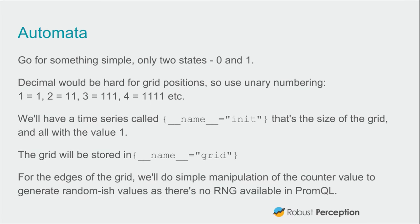Let's go for something very simple and keep it basic — nice and binary, states 0 and 1. Using regular expressions to manipulate decimals is not going to be easy, particularly as the decimals could be of arbitrary length. So we're going to use a unary numbering system. Binary has two digits, ternary has three, decimal has ten, unary has one. So one is '1', two is '11', three is '111', and so on. This is an actual thing, to be clear. We'll have a time series using the convention of __name__ set to 'init' as the size of the grid we want, with value one. The grid itself will be stored in 'grid'.